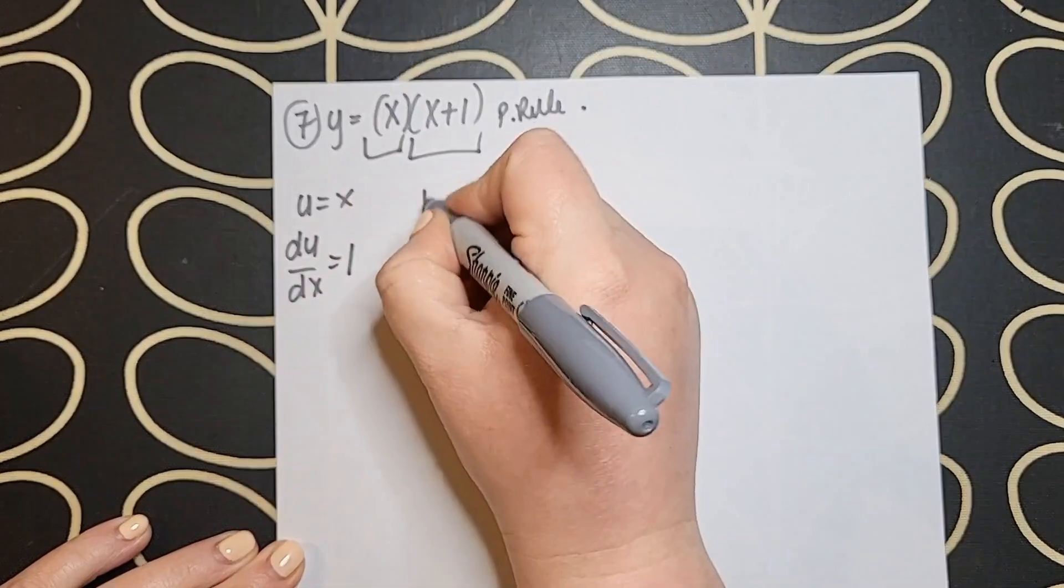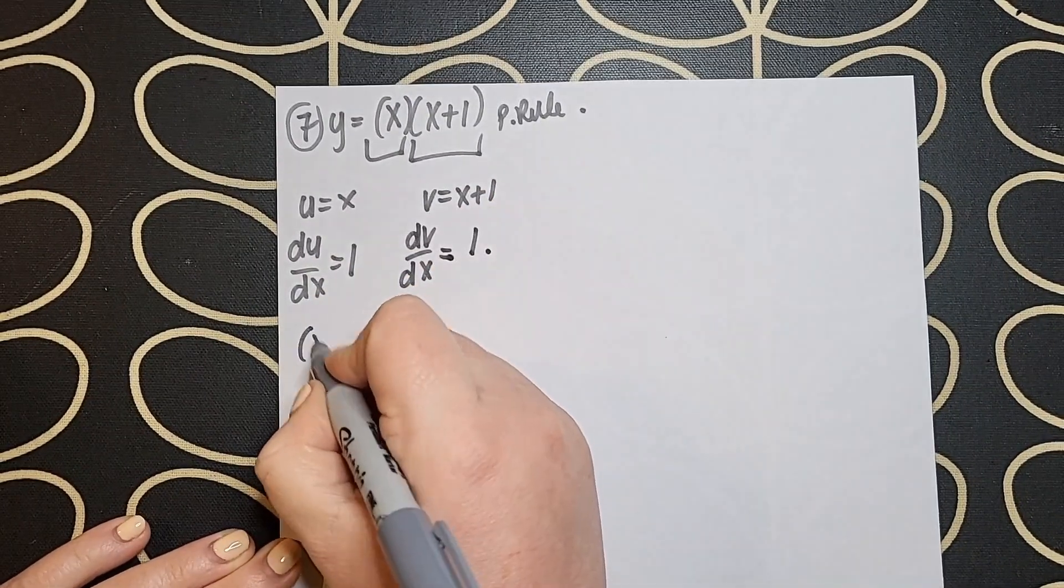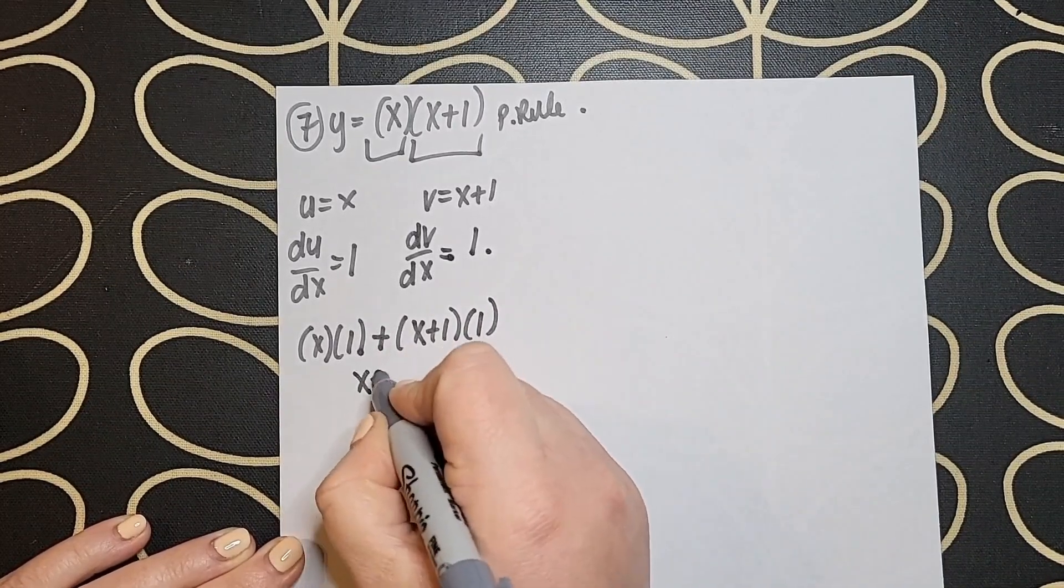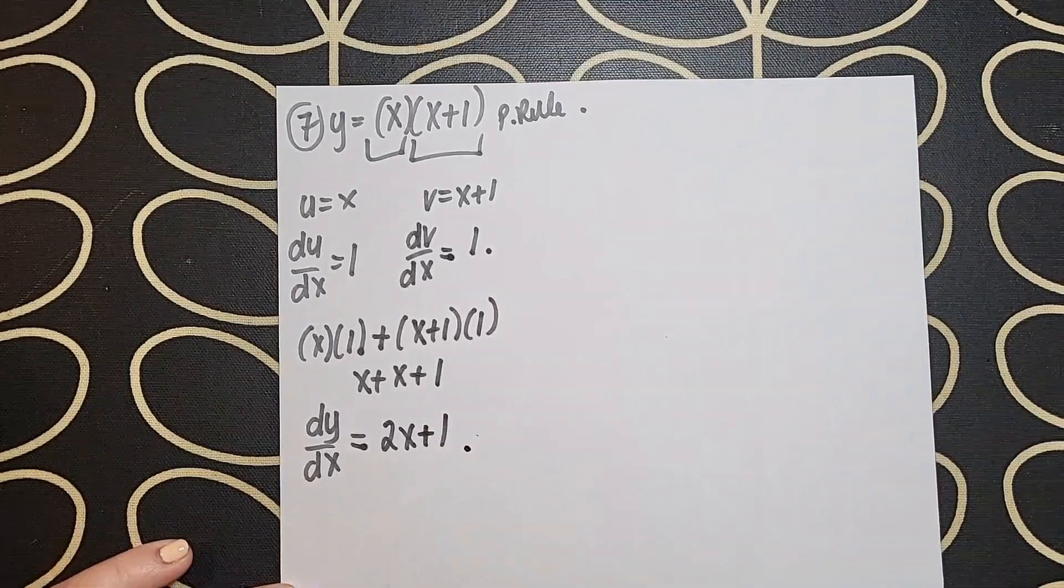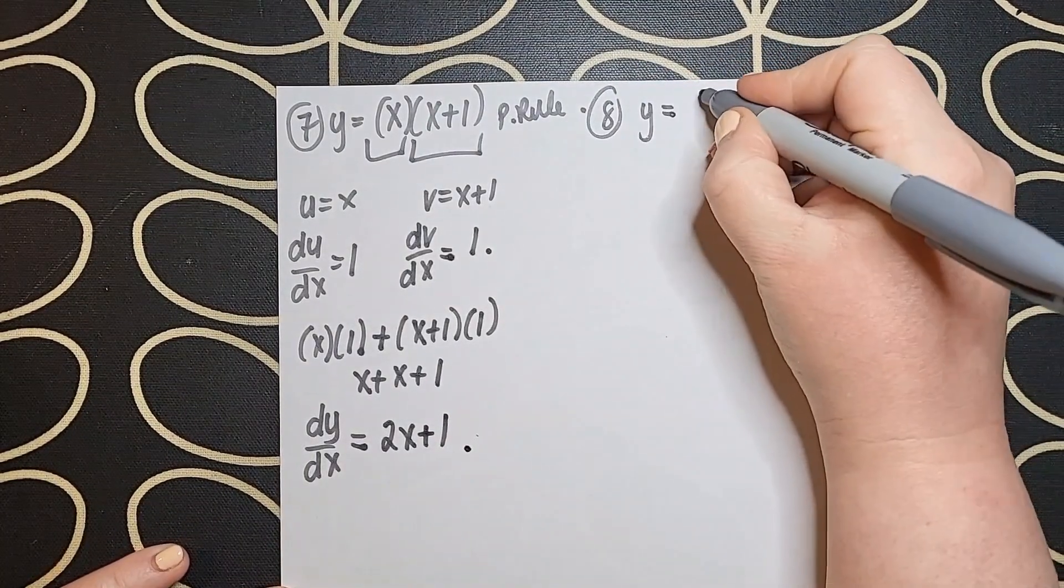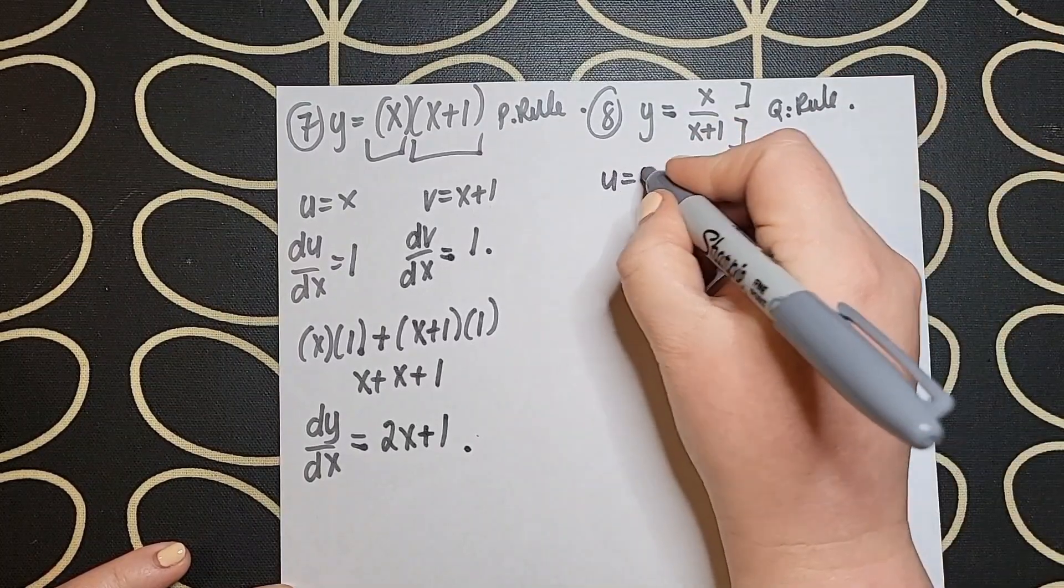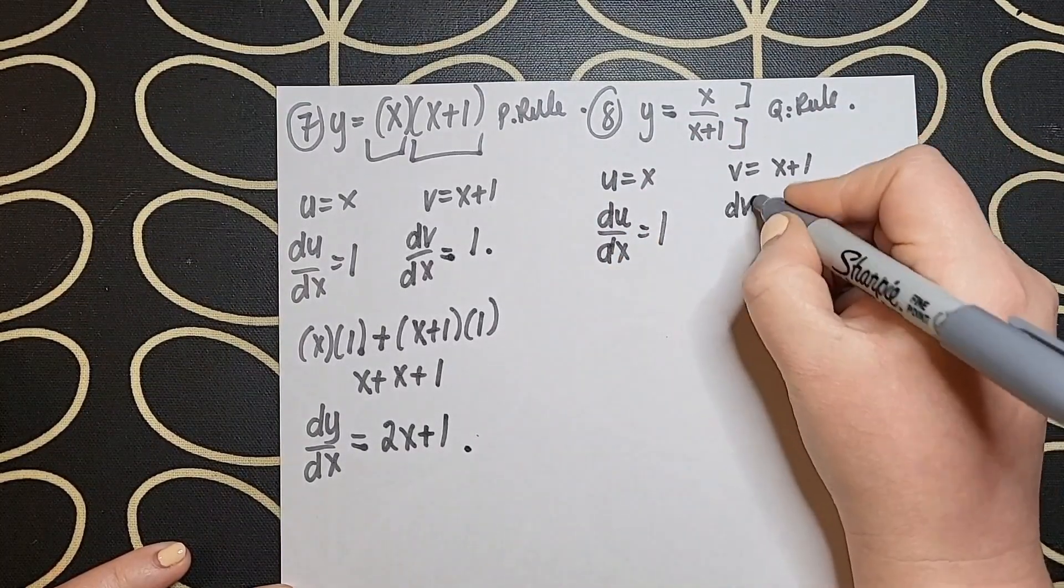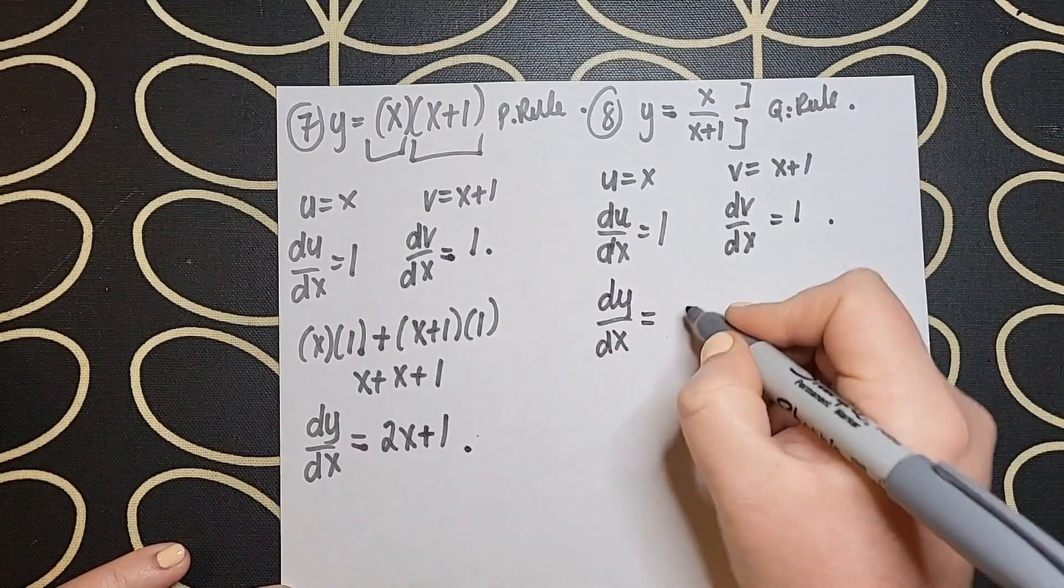So from now on these are all Leaving Cert higher level student questions. In question seven there we are dealing with the product rule. Product means to multiply. You can see there at the top we have an x and an x plus one multiplying by each other. So we use the product rule. We have a u and a v and we differentiate u, we differentiate v and we use that rule on page 25 in our log tables to pull them all together and simplify down to get our dy dx.